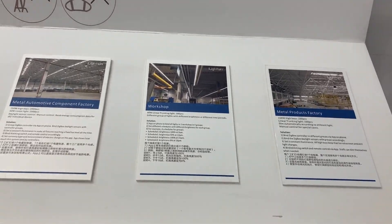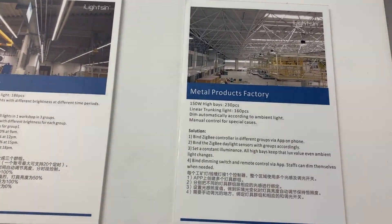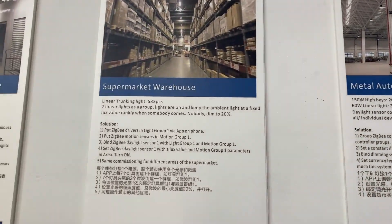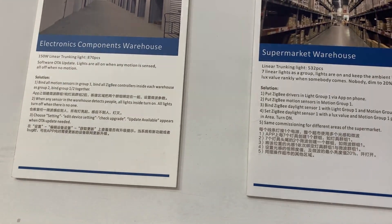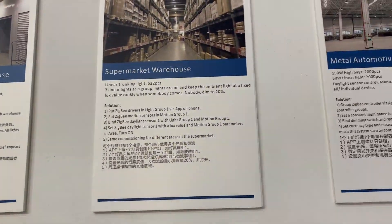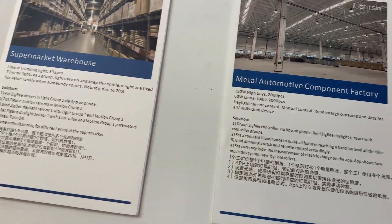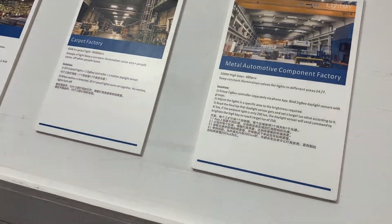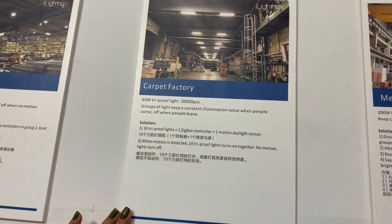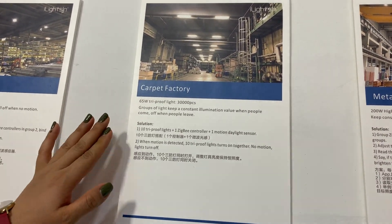Finally, here are some projects completed with our system: a metal product factory, workshops, manufacturers, and warehouses. Most of them use the motion sensor for three-level dimming. Where there are skylights, they also use the daylight sensor for constant lux control. We also completed projects in Jakarta and Belgium — a typical project with 30,000 pieces of track-proof lights, using one controller per 10 fixtures, with the controller connected to a combined daylight and motion sensor.